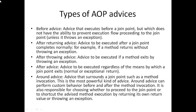After advice is executed regardless of the means by which a join point exits — normal or exceptional return. Around advice surrounds a join point such as a method invocation and is the most powerful kind of advice. Around advice can perform custom behavior before and after the method invocation. It is also responsible for choosing whether to proceed to the join point or to shortcut the advised method execution by returning its own value or throwing an exception.